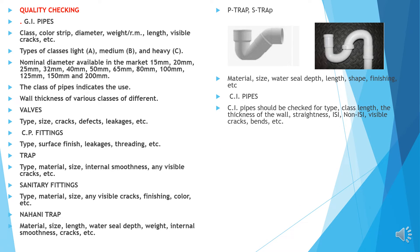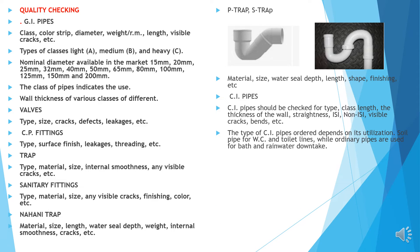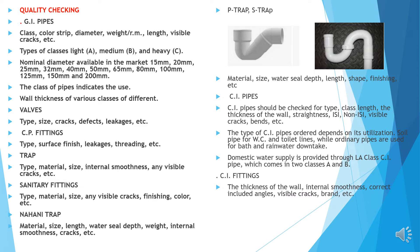CI pipes: should be checked for type, class, length, thickness of the wall, straightness, ISI mark, visible cracks, bends, etc. The type of CI pipe depends upon its utilization — soil pipe for WC and toilet lines, while ordinary pipes are used for bath and rainwater downpipe. Domestic water supplies provided through LA class CI pipe, which comes in two classes A and B. CI fittings: check thickness of the wall, internal smoothness, correct angles, visible cracks, brands, etc.